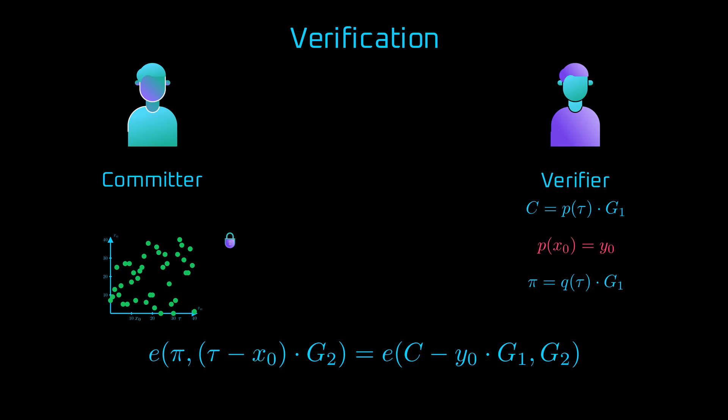And on the other side, in the first argument of the pairing is commitment C, minus y0 multiplied by G1. Seemingly, the equation is random, but let's see what it actually represents. Knowing the definitions of commitment C and proof pi, we can break it down and get the form. The operation on the pairing is bilinear, so we can move the factor from one argument to another.